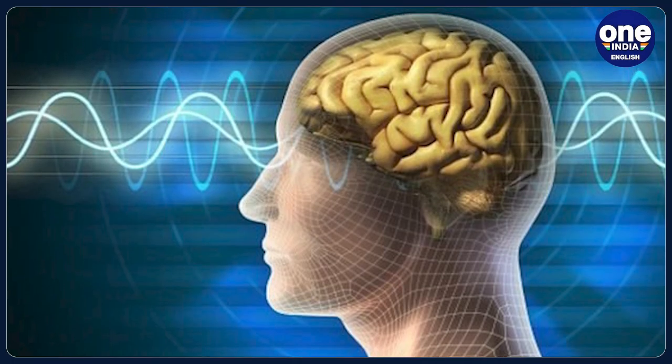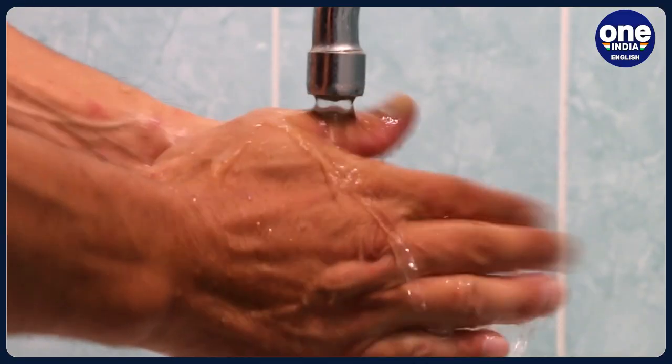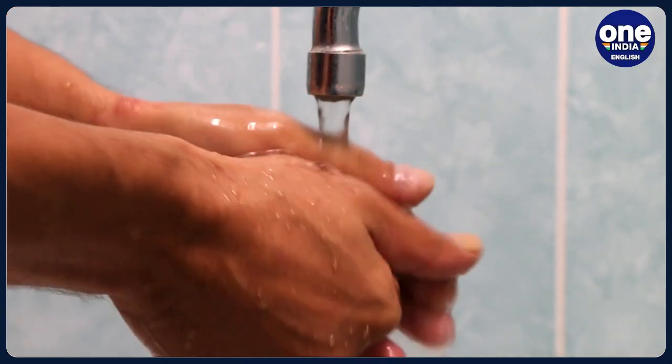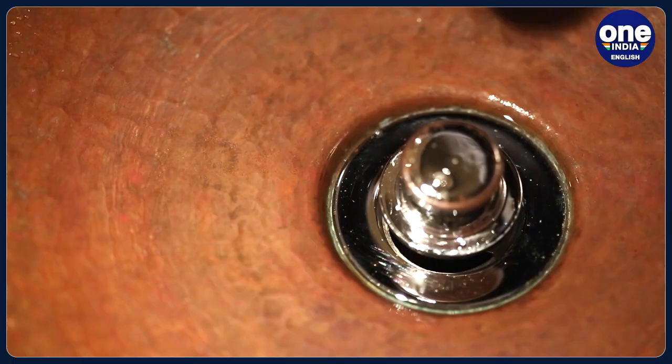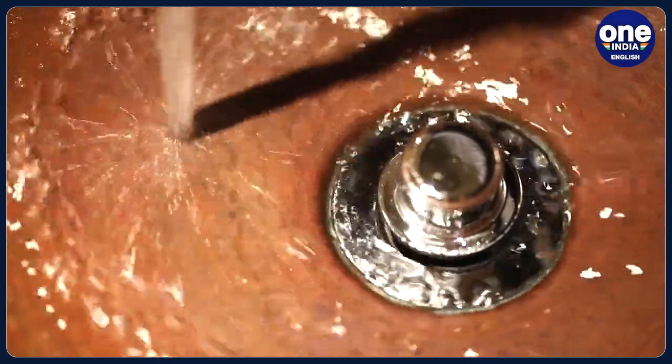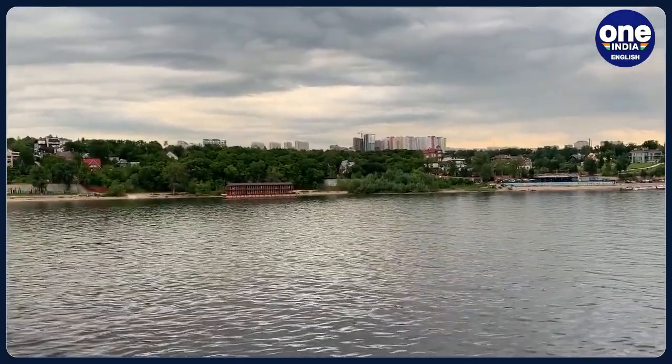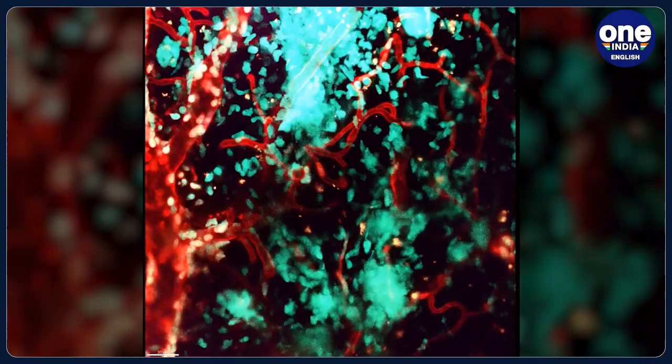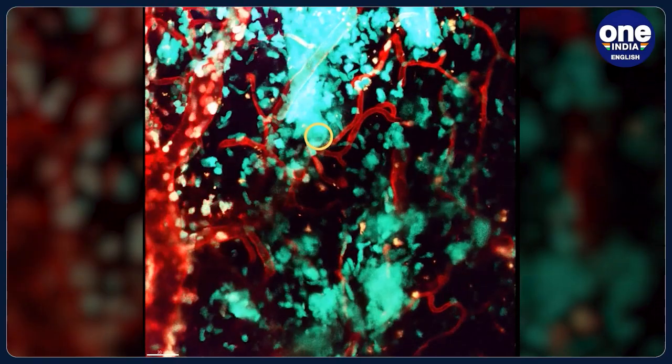Infections with Naegleria fowleri can also occur when people use contaminated tap water to clean their noses during religious practices or to rinse their sinuses, thus sending water up the nose and starting the infection. In a few cases, people have contracted this infection from recreational water that lacks sufficient chlorine, such as from water in pools, splash pads, or even surf parks. Research has also clearly stated that Naegleria fowleri cannot spread through water vapour or aerosol droplets such as shower mist or vapour from a humidifier.